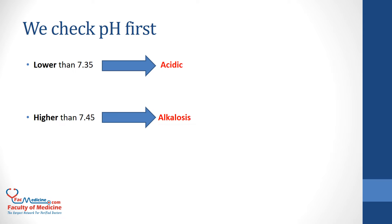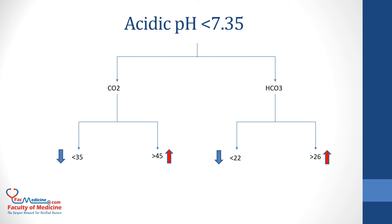The first step of interpreting ABG is checking the pH value. If it was lower than 7.35, then this is acidic. If it was higher than 7.45, then this is alkalotic. If the pH of the blood is acidic — less than 7.35 — we first check CO2. If it was increased, it is respiratory acidosis. If it was normal, then we check HCO3, and if it was decreased — less than 22 mEq per liter — then this is metabolic acidosis.